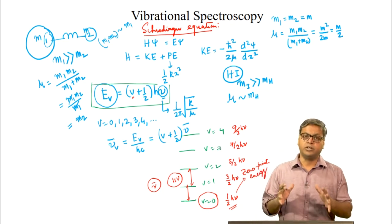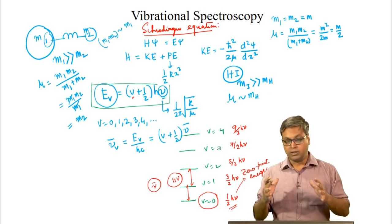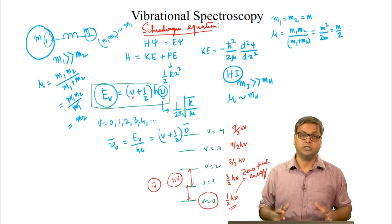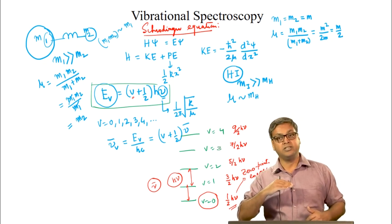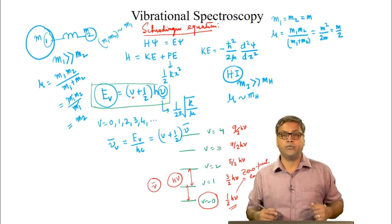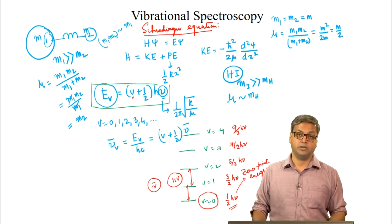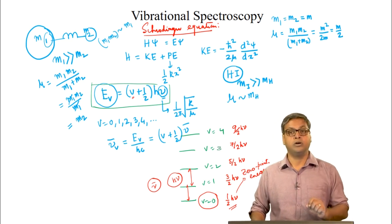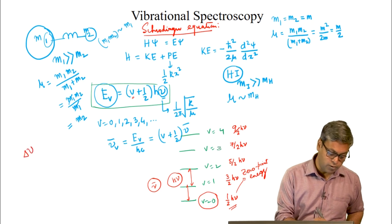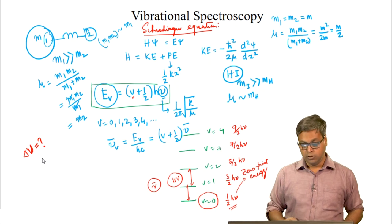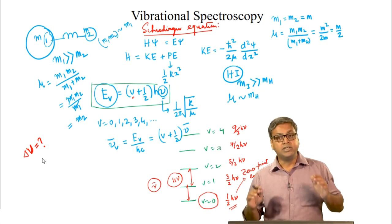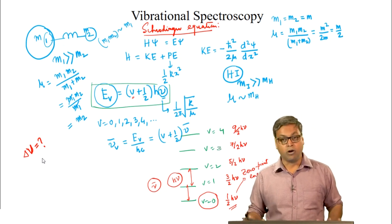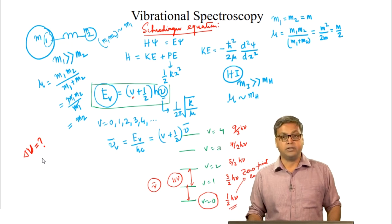In order to obtain a vibrational spectrum, transitions must happen from one vibrational energy level to another. We have to ask: between which levels can transitions take place? In other words, what change in vibrational quantum number is allowed — what is the allowed value of delta v? In the next lecture we will discuss the selection rules for vibrational transitions. In the remaining part of this lecture, we will solve a few questions on the topics discussed today.